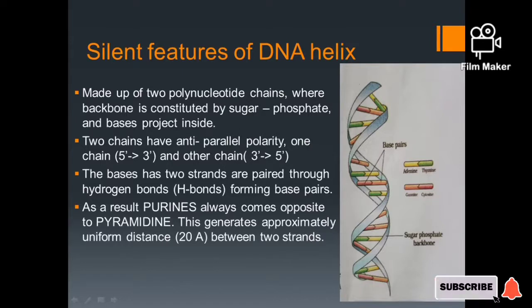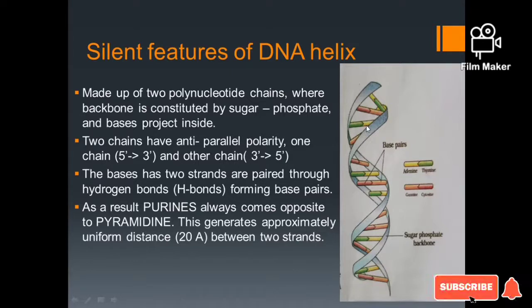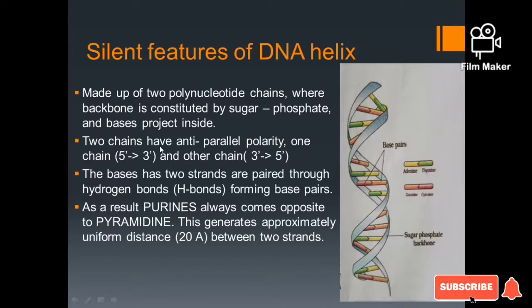The DNA is a double helix structure with two polynucleotide chains. This is the backbone of sugar and phosphate, and the bases project inside. The two chains have anti-parallel polarity — one chain runs 5' to 3' and the other chain runs 3' to 5'.